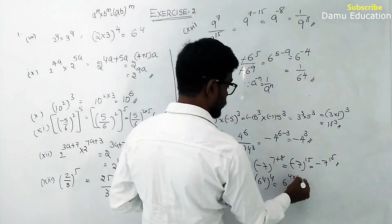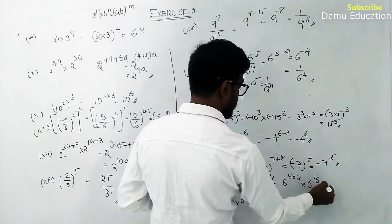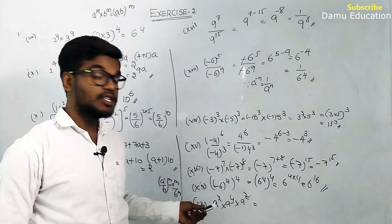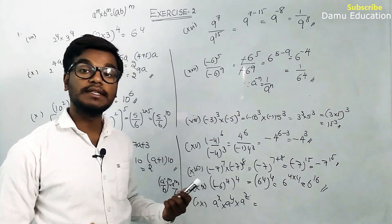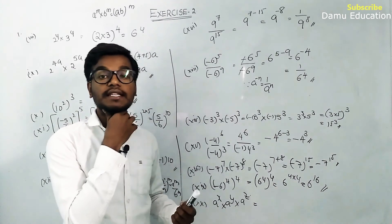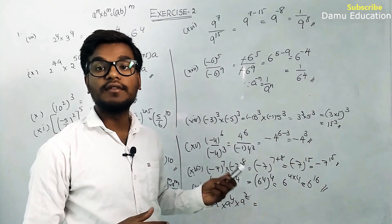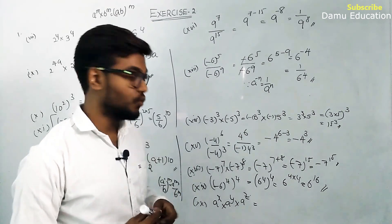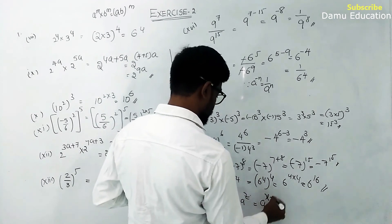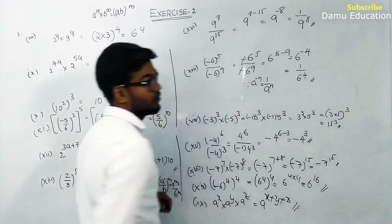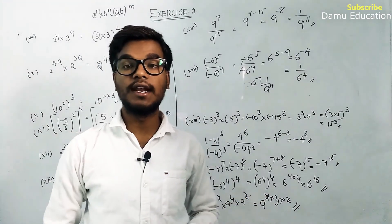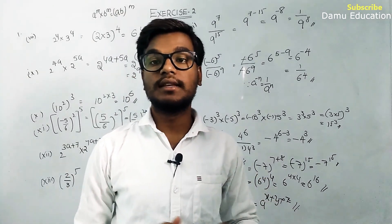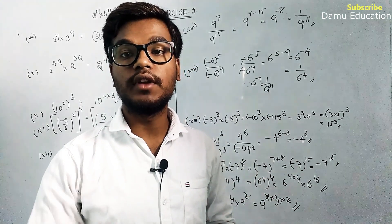Final question: a power x into a power y into a power z. In multiplication, a appears x times, then y times, then z times. So we add all the exponents: a power x plus y plus z. This follows the same formula a power m into a power n into a power p equals a power m plus n plus p. Please subscribe if you haven't and watch more videos on YouTube.